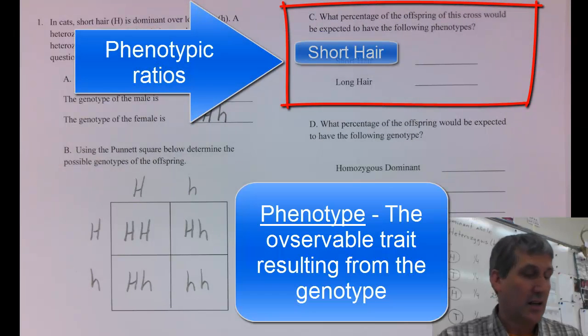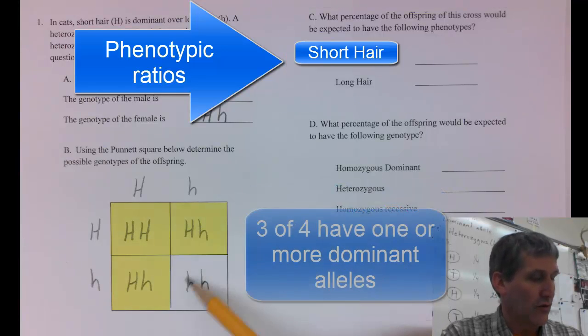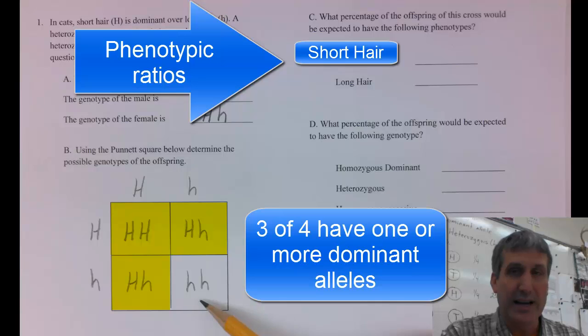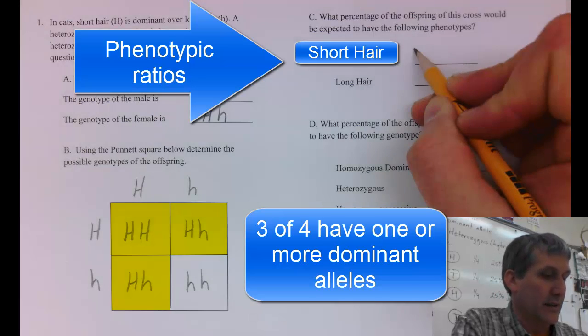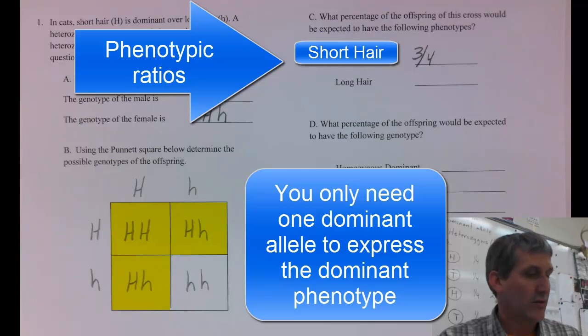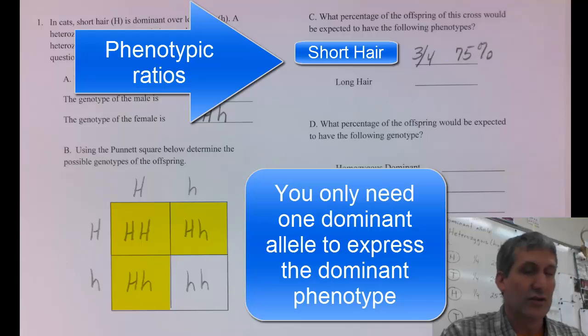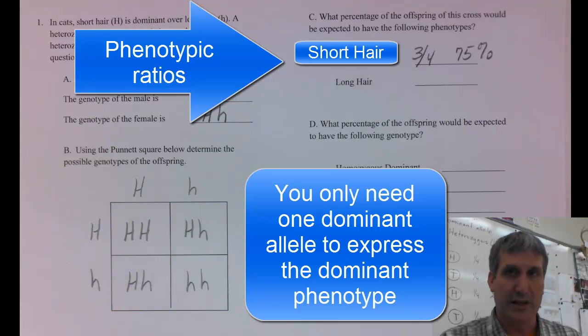In this case, short hair is the dominant phenotype. So you look at the cross and you can see that three out of the four possibilities are going to have the short haired trait. That's 75% short haired in this particular cross.